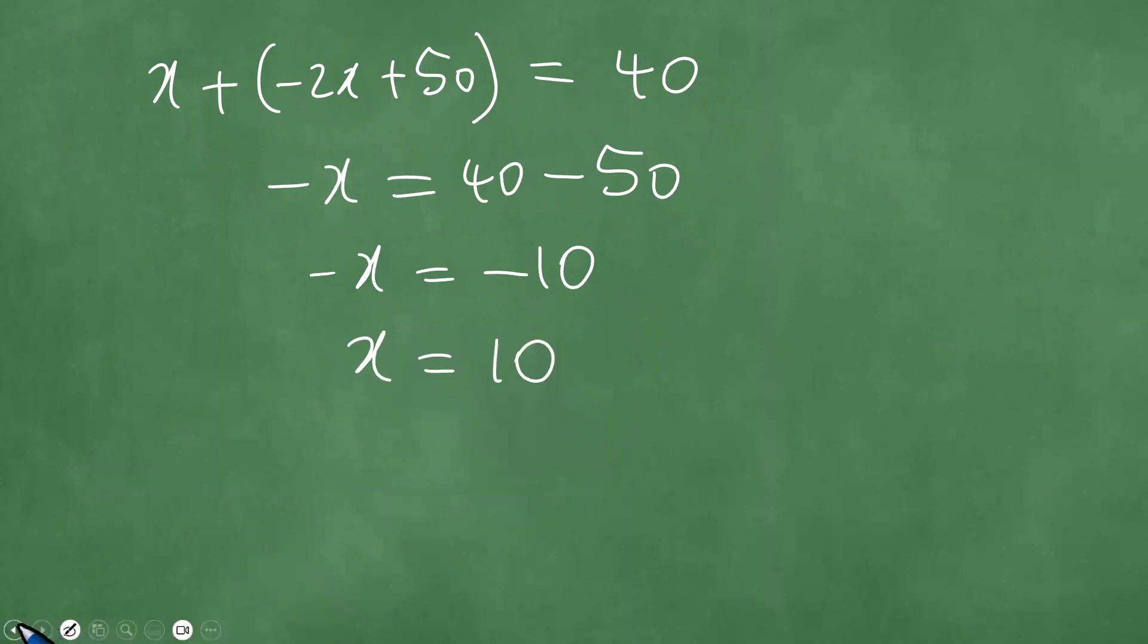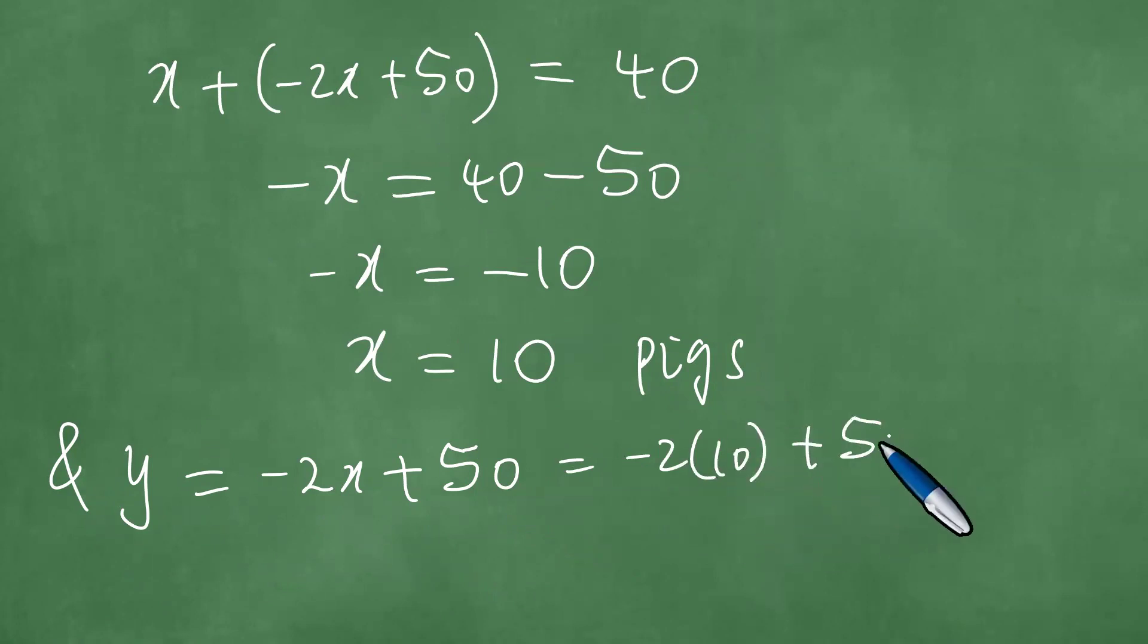We know that X is the number of pigs. So in other words, it means that we have the exact total number of 10 pigs. And Y is minus 2X plus 50, which is minus 2 times 10 plus 50. This is minus 20 plus 50, which equals 30.